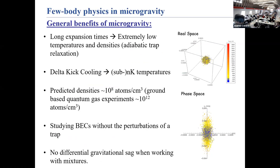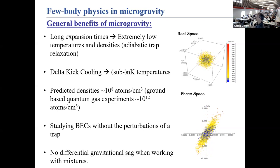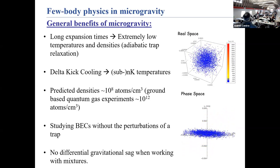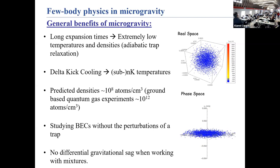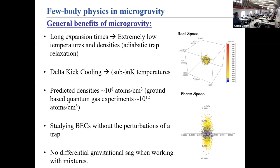Why is microgravity very favorable for this? If you've got atoms in a trap and suddenly turn the trap off, in microgravity the atoms don't fall but the cloud still expands. After a certain expansion time, you very briefly turn on the harmonic trap again at a large strength — this rapidly stops all the atoms at the same time. Now you have a cloud that is very large and very cold. Those are exactly the conditions we need: ultra-cold temperatures because these three-body bound states are very fragile, and very low densities because we don't want any perturbing atoms between the bound atoms.